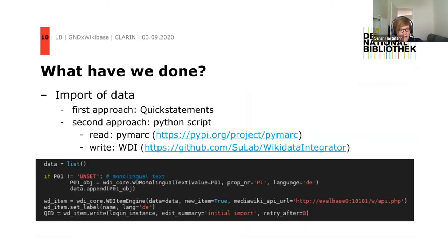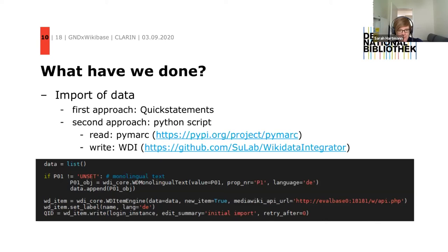For the import of data, our first approach was to use the tool called QuickStatements from Wikibase. Our second approach was to use a Python script: reading GND data via PyMARC and then writing it with a tool called Wikidata Integrator, or WDI for short.